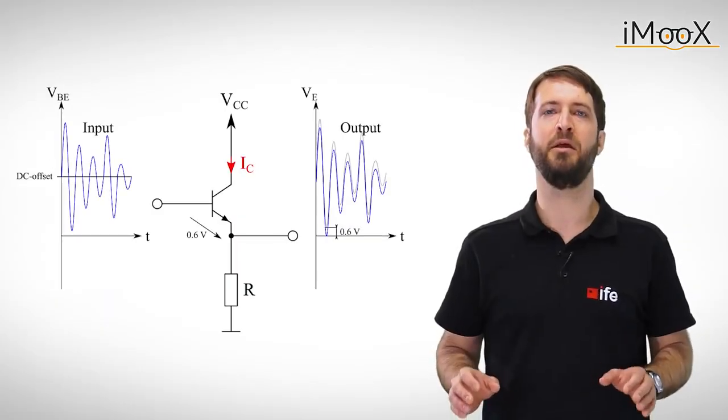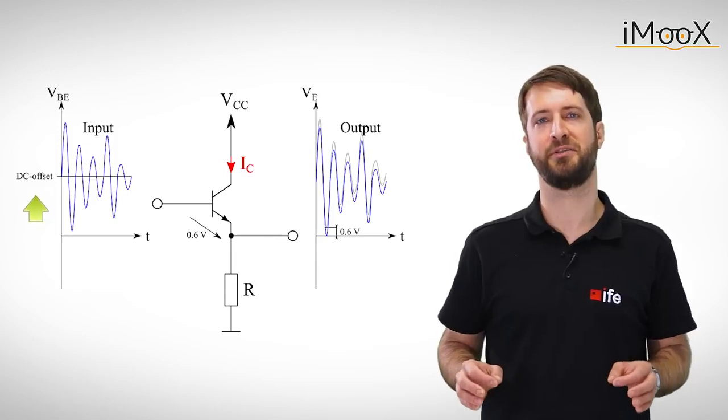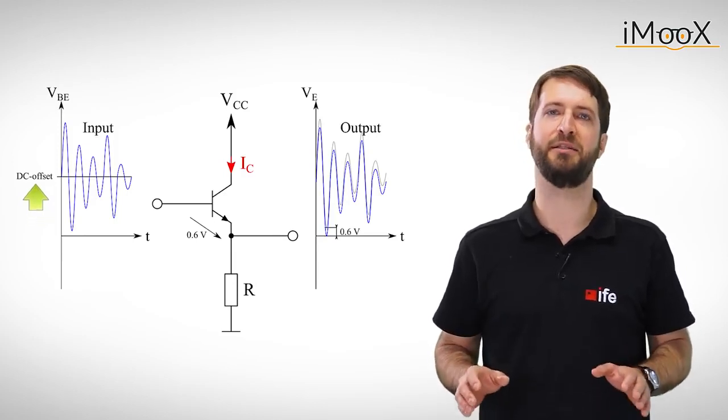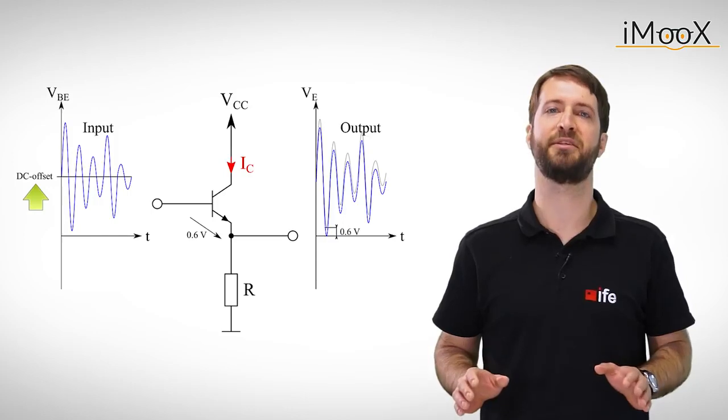In order to avoid clipping, we simply add a DC offset to the input signal. This is called biasing, and it is necessary for any transistor amplifier.